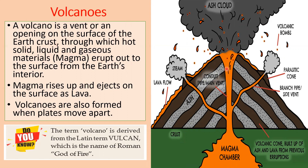Magma rises up and ejects on the surface as lava. Volcanoes also form when plates move apart. The term volcano is derived from the Latin term Vulcan, which is the name of the Roman god of fire. The magma chamber is where the magma comes out to the surface as lava. This magma is extremely hot liquid and semi-liquid rock located under the earth's surface, and it can push through holes or cracks in the earth's crust causing a volcanic eruption.